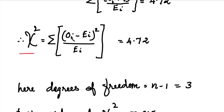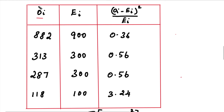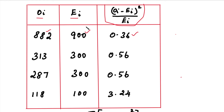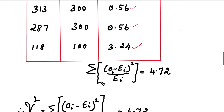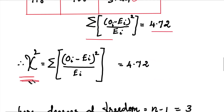In the chi-square test formula, the summation of (Oi minus Ei) whole square divided by Ei. Using this formula with a table of Oi and Ei values: for example, 882 minus 900 gives one term. Computing all four terms and summing them gives the calculated chi-square value of 4.72.